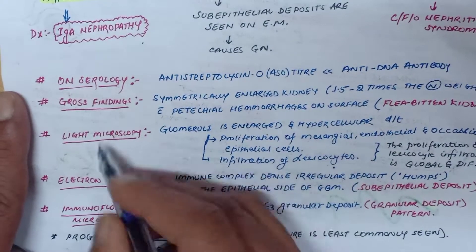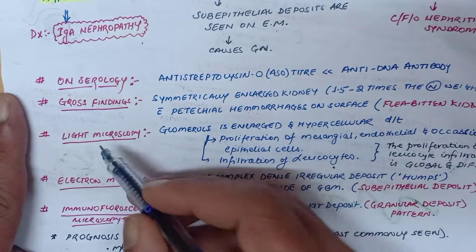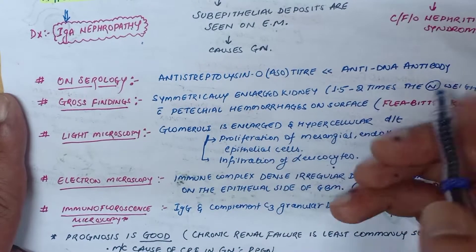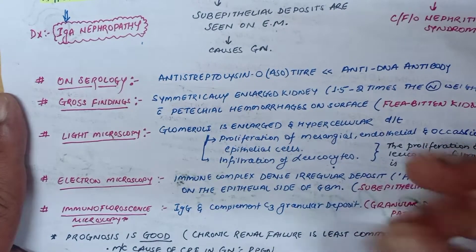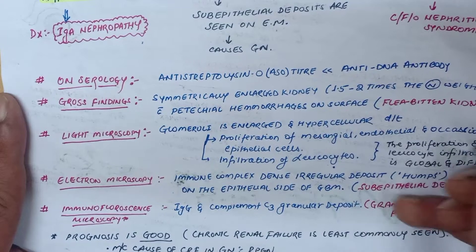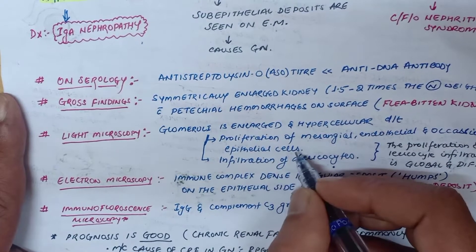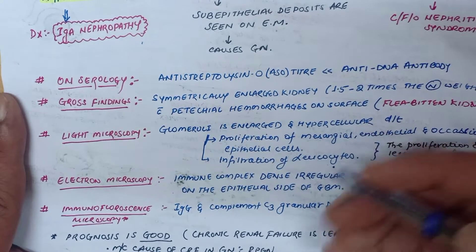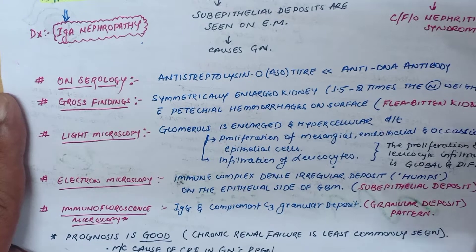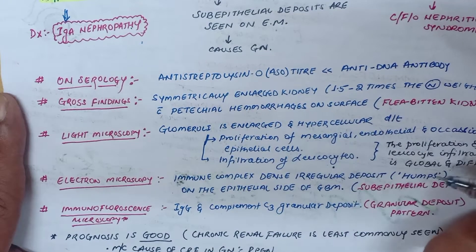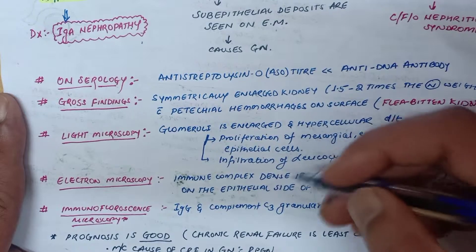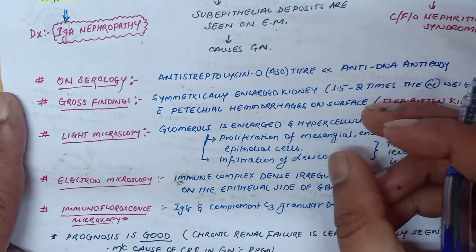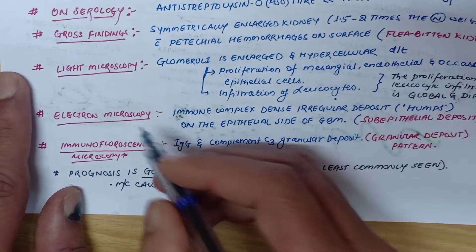In light microscopy, the glomerulus will be enlarged and hypercellular. There will be lots of proliferation of mesangial cells, endothelial cells, and occasionally epithelial cells. All the cells will be proliferating and there will be infiltration of leukocytes, so the proliferation and leukocyte infiltration is global and diffuse.